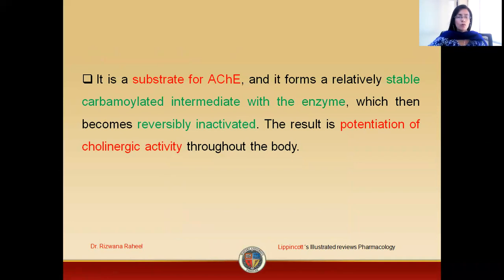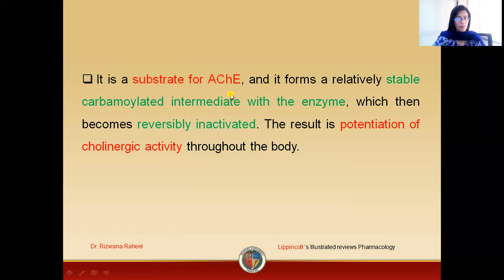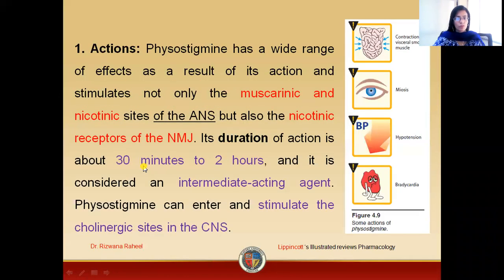The mode of action of the drug: physostigmine binds reversibly to the enzyme acetylcholinesterase, forming a stable carbamylated intermediate with the enzyme. This drug inhibits the enzyme, resulting in an increased level of the neurotransmitter acetylcholine. Physostigmine is a reversible inactivator of acetylcholinesterase, so the result is enhanced activity of the cholinergic neurotransmitter acetylcholine throughout the body.